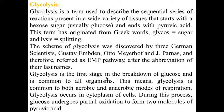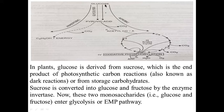Glycolysis is the first stage in the breakdown of glucose and is common to all organisms. This means glycolysis is common to both aerobic and anaerobic modes of respiration. Glycolysis occurs in the cytoplasm of cells. During this process, glucose undergoes partial oxidation to form two molecules of pyruvic acid — that means one molecule of the 6-carbon compound is partially oxidized to form two molecules of the 3-carbon compound pyruvic acid. This glycolysis is common for both anaerobic as well as aerobic respiration.